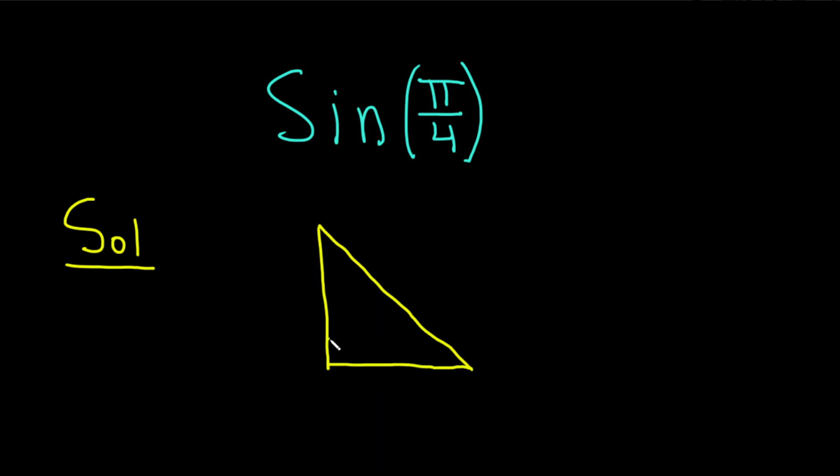This triangle is a right triangle. This angle here is π/4, and this angle here is also π/4. The sides are 1, 1, and √2.